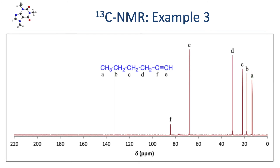In our next example, we have an alkyne. There are no mirror planes reflecting one carbon to another, and no carbons can be interchanged by free rotation. The two carbons in the triple bond actually show up in the electronegative region — a simple way to remember this is that alkyne carbons are sp-hybridized, and sp-hybridized atoms are more electronegative than sp-2 or sp-3 atoms. Carbon F shows up at a slightly higher frequency than carbon E because carbon F is bonded to two carbons, whereas carbon E is bonded to one carbon and one hydrogen. The four generic carbons A through D all show up where expected, given their relative position to the deshielding effects of those pi bonds.